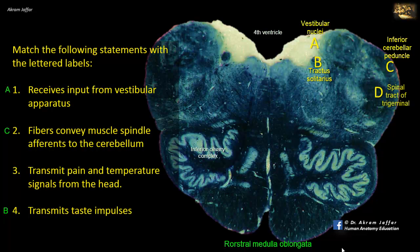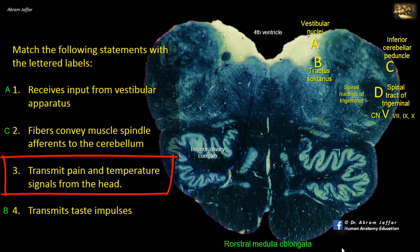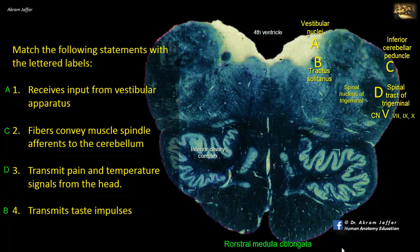D is the spinal tract of the trigeminal nerve. This tract consists of sensory fibers derived mainly from the trigeminal, but also includes fibers from the facial, glossopharyngeal, and vagus nerves. The spinal tract of the trigeminal nerve descends from the level where the trigeminal nerve is attached to the pons, down through the medulla to the level of the upper cervical spinal cord — hence the name spinal tract and spinal nucleus of the trigeminal. It gives off fibers that terminate at various levels in the medially adjacent spinal trigeminal nucleus. The tract and nucleus mediate pain and temperature sensations from the head. Thus D matches with 3: transmit pain and temperature signals from the head.